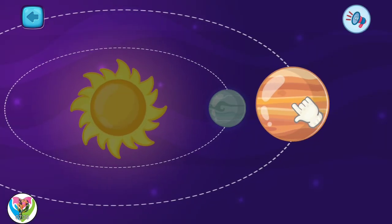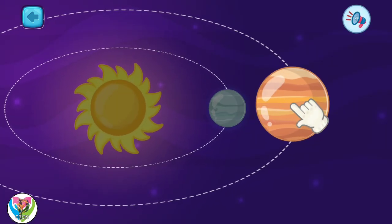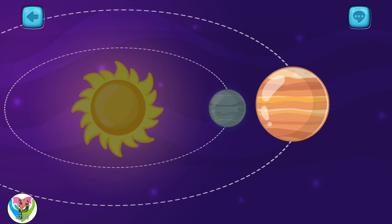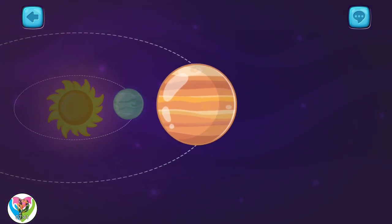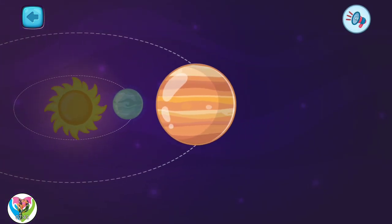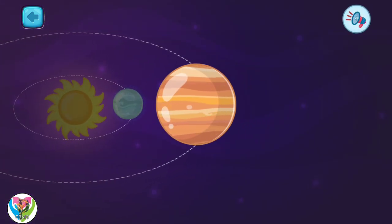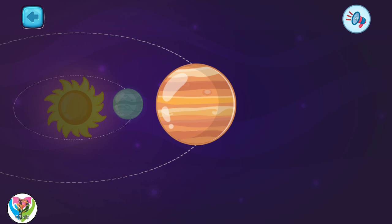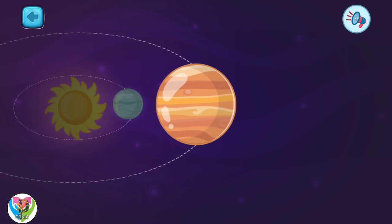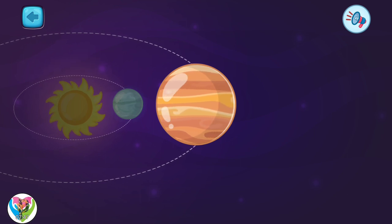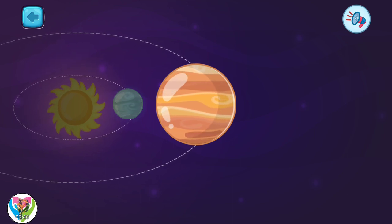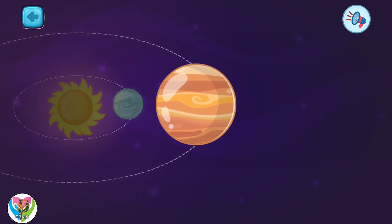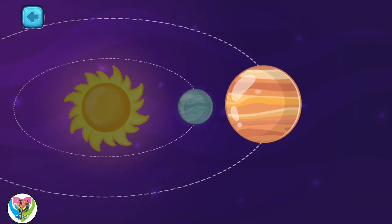Only one left. Pick it. This one is Venus. It is the second closest planet to the sun. Venus is the hottest planet in our solar system.